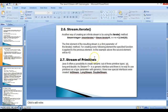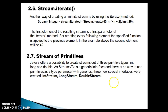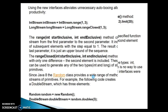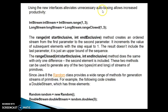Now let's explore stream of primitives. Java 8 offers the possibility to create streams out of three primitive types: int, long, and double. The Stream interface takes a generic parameter T, and you can only pass objects — you cannot pass primitive types. That's why Java engineers implemented three new special interfaces to deal with primitive streams: IntStream, LongStream, and DoubleStream. Using these interfaces alleviates unnecessary autoboxing and increases productivity.